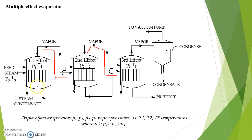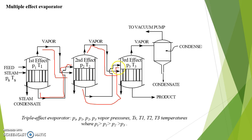From the first effect evaporator, the concentrated liquid coming out is used as a source of feed in the second effect evaporator, and from the second it is again used as a source of feed in the third effect evaporator. Finally, from the last effect we collect the product as a concentrated product.